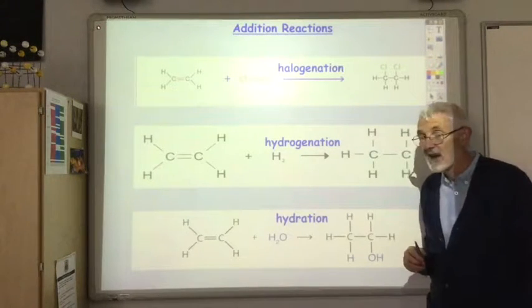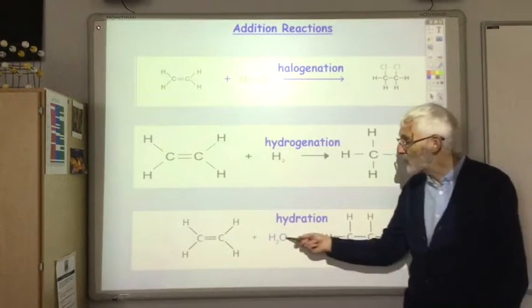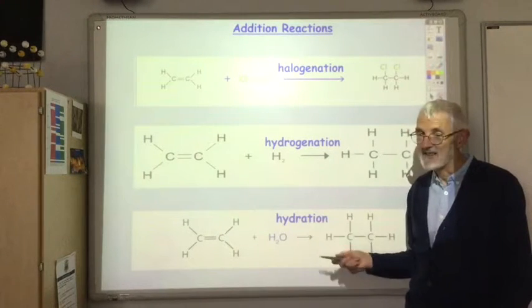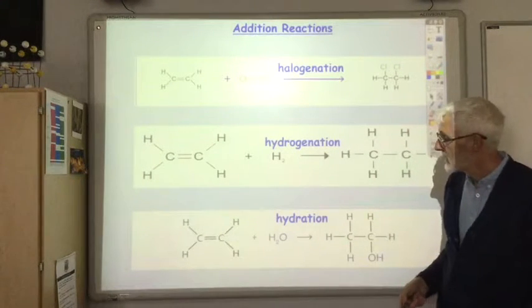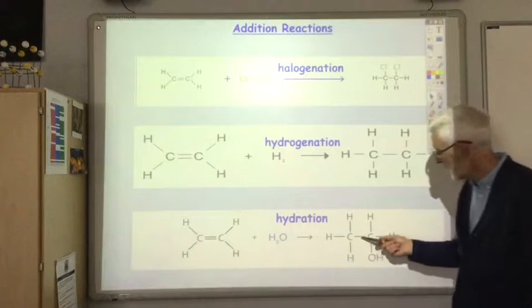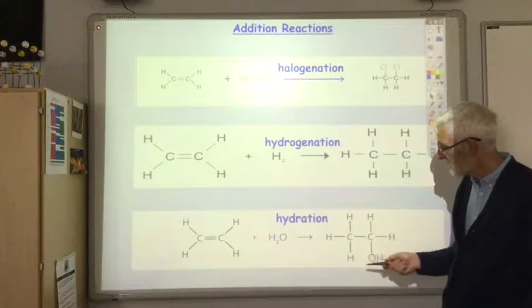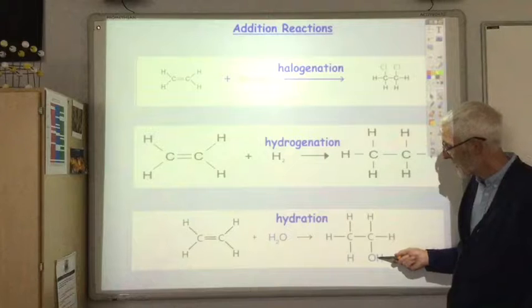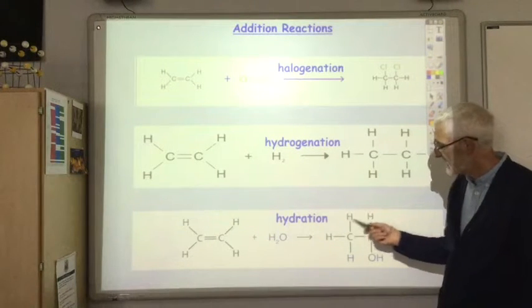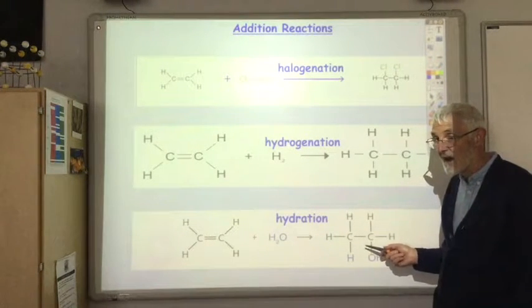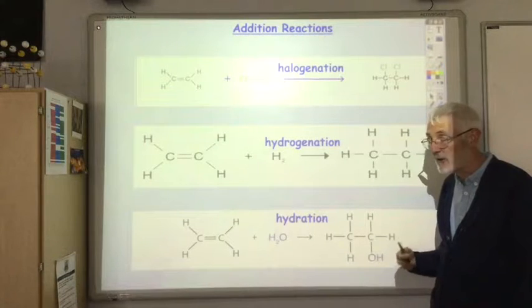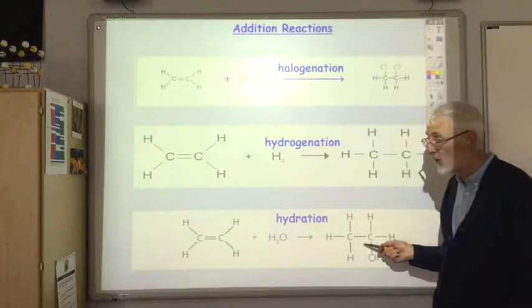The third addition reaction you should know is adding water. That's called hydration. We break the carbon-carbon double bond, add an H to one of the carbons and an OH to the other carbon. This is an alcohol we've made here. In the next section 2.2 we will look at alcohols in a lot more detail.